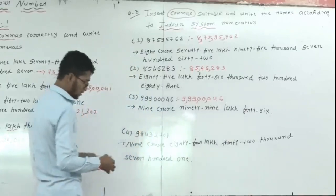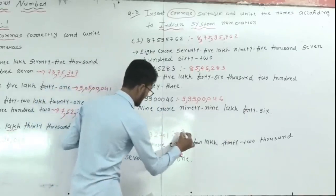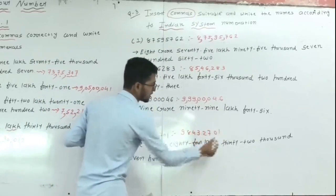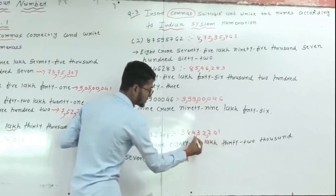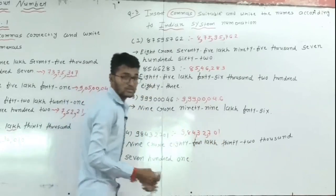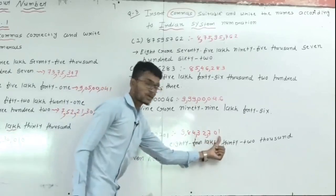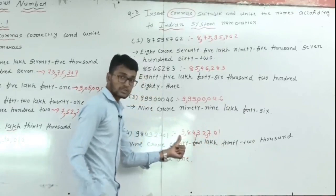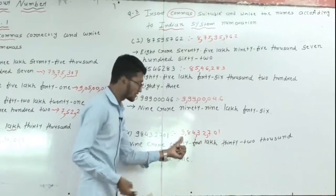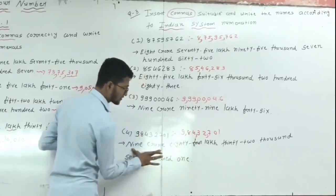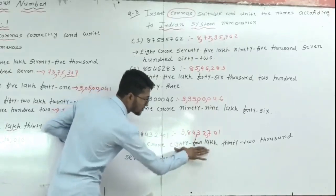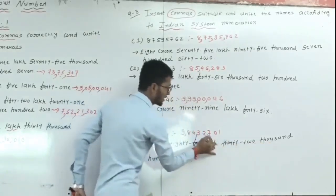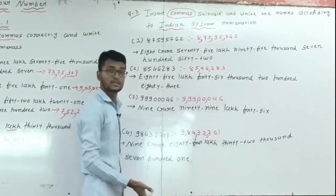And the last question number 3: number 98432701. Apply Indian system: first 3 digits, comma, then 2 digits, comma, then 2 digits. Place values: ones, tens, hundreds, thousands, ten thousands, lakh, ten lakh, crore. This gives: nine crore, eighty-four lakh, thirty-two thousand, seven hundred and one.